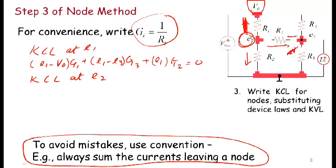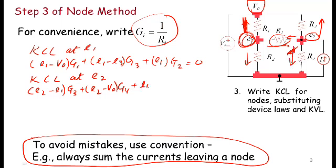So the current heading in this direction will be E2 minus E1 divided by R3, or multiplied by G3. Then the current going up will be E2 minus V0 times G4. And the current leaving the node and going down will be E2 times G5.